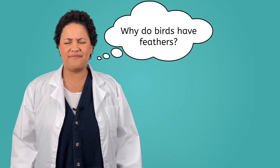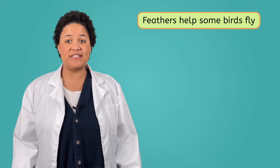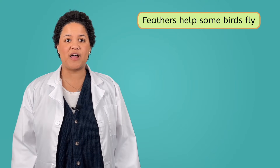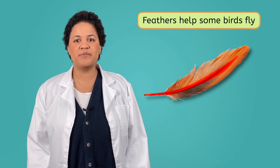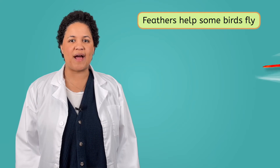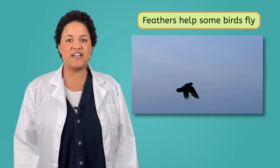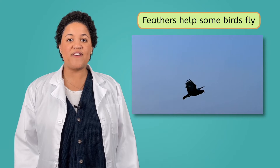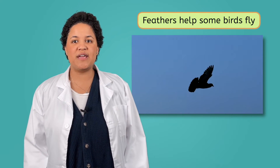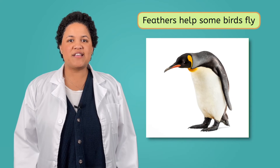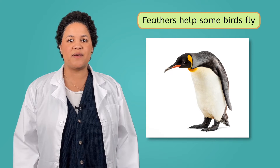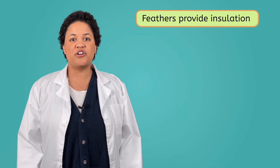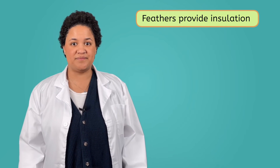Why do birds have feathers? Well, there are lots of reasons. Many birds have adapted to use their feathers to help them fly. Feathers are curved, so when a bird flaps its wings, the curved shape helps to push the air back, which helps them lift up off the ground, balance, and even steer in different directions. Feathers are also very light, which is important for keeping birds in the air. Birds that are heavy, like the ostrich or penguin, often do not have feathers strong enough to lift them off the ground.